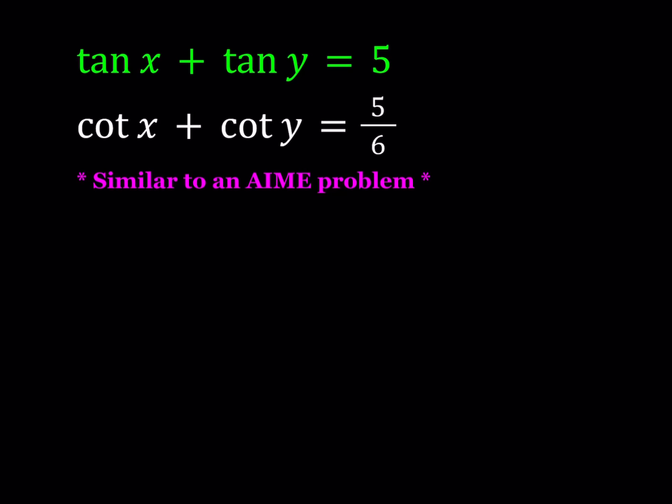Hello everyone. In this video, we're going to be solving a trigonometric system. This is similar to an AIME problem, I think from 1986. It's slightly different, asking for something else there, but the problems are very similar. We have tangent x plus tangent y equals 5 and cotangent x plus cotangent y equals 5 over 6. We're going to be solving for the x values and the y values.